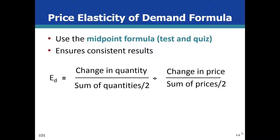The midpoint formula first calculates the difference in the quantity demanded and then divides the result by averaging the starting and ending quantities. We do the same for price. Once these two steps are done, we divide the demand result by the price result to find the elasticity of demand. This makes going up and going down the demand curve yield the same elasticity calculation — and that's the whole objective of the midpoint formula.